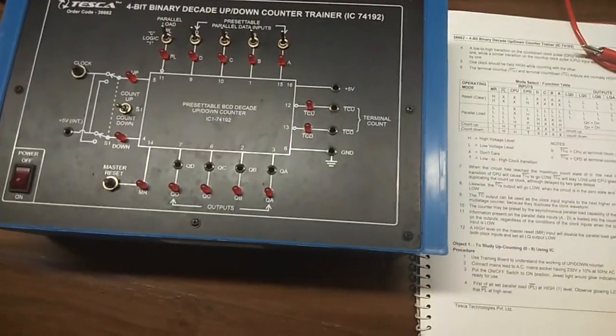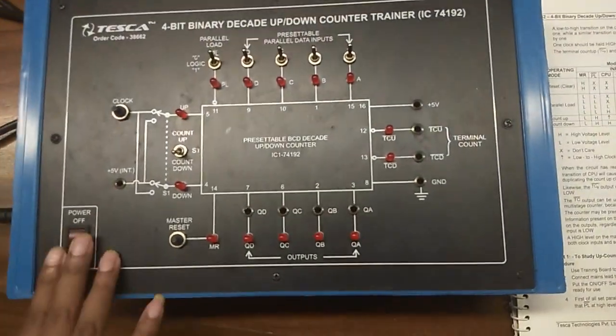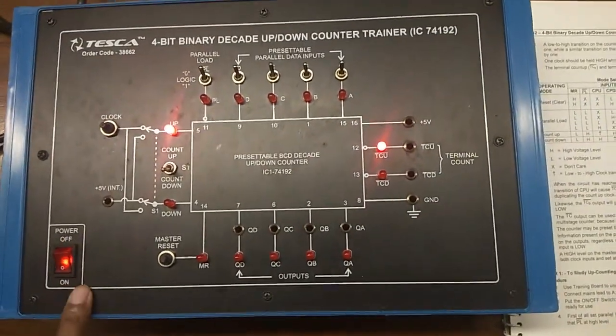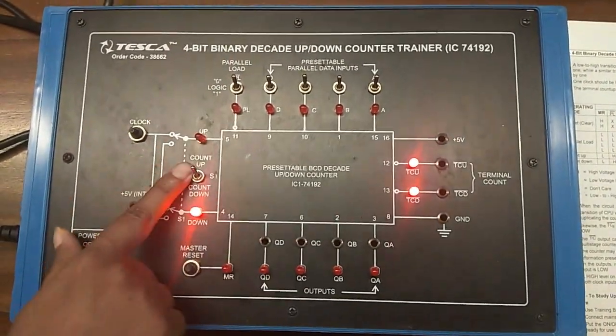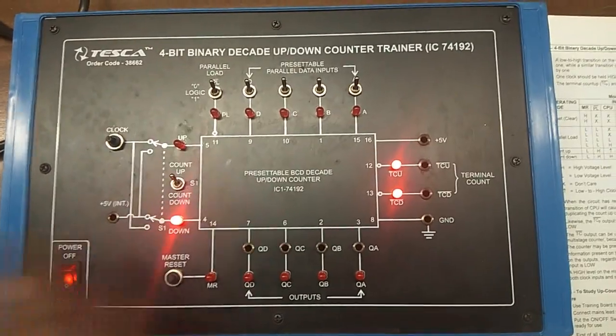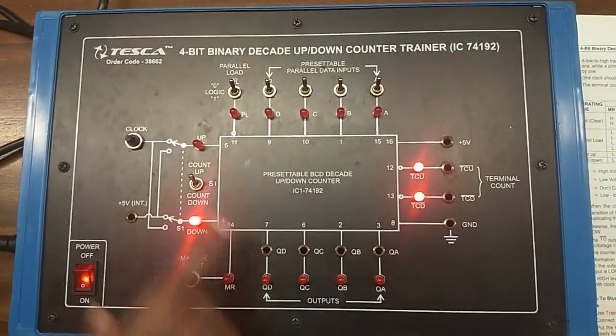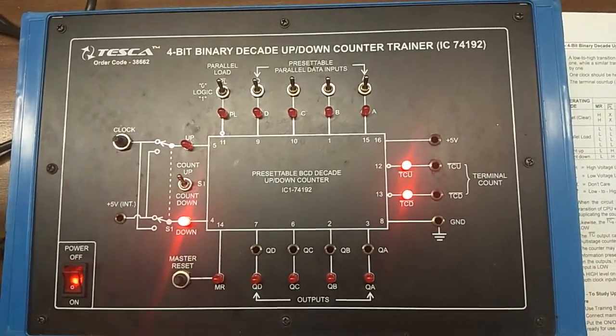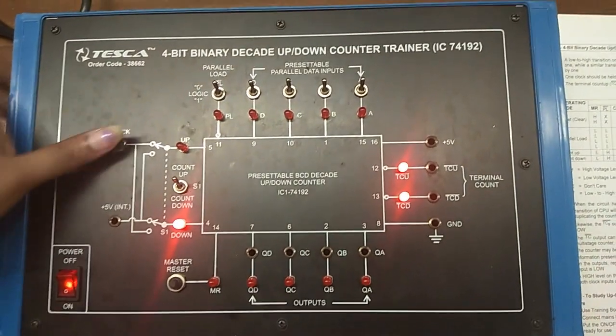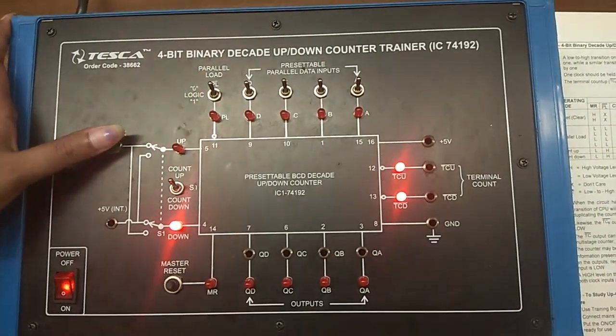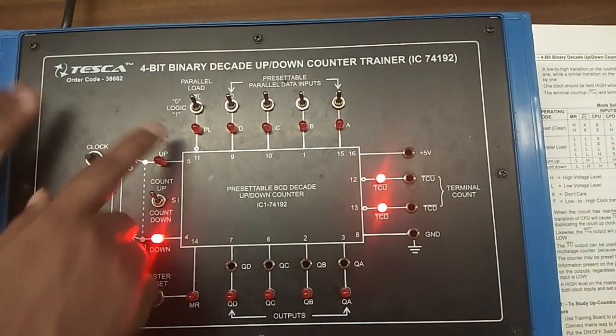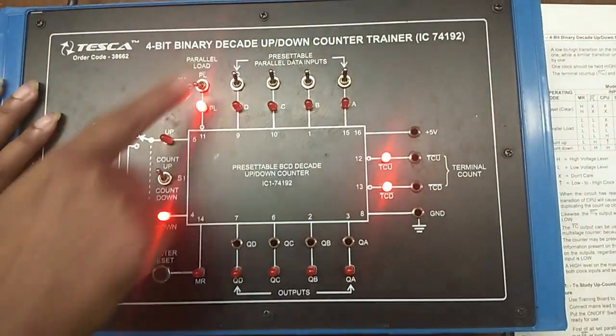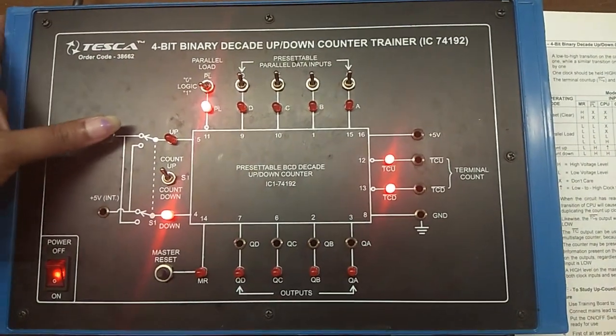First we will study up counting using this IC. Turn on the kit. Keep your switch at count up position. I will give the data through here with the clock pulses. Also you need to keep this switch PL at 1 position.